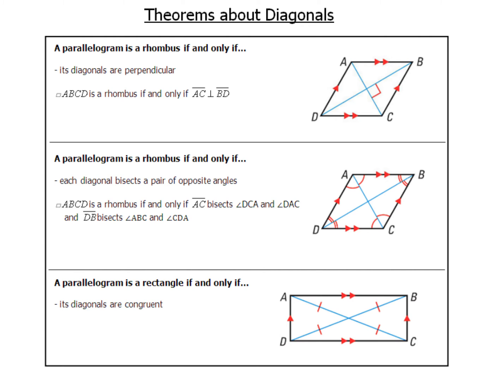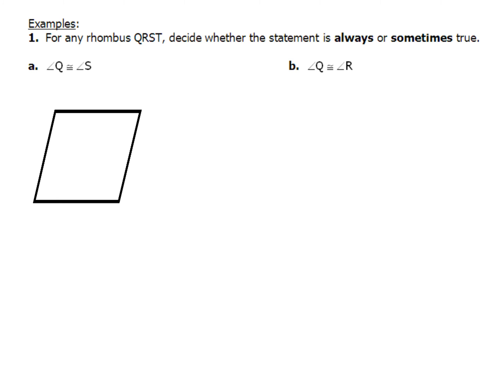Lastly, a parallelogram is a rectangle if and only if its diagonals are congruent. Those are three specific theorems about diagonals — different textbooks give them different numbers, so we won't number them here. For our first example, we have rhombus QRST and need to decide whether each statement is always or sometimes true.